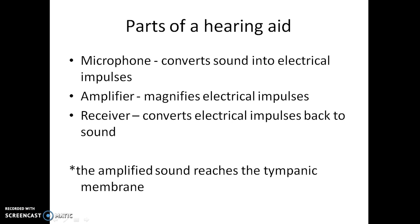What are the parts of a hearing aid? A hearing aid basically consists of three parts: a microphone, an amplifier, and a receiver. A microphone serves to convert the sound waves into electrical impulses. The amplifier then magnifies these electrical impulses. The receiver then converts the electrical impulses back to sound waves.